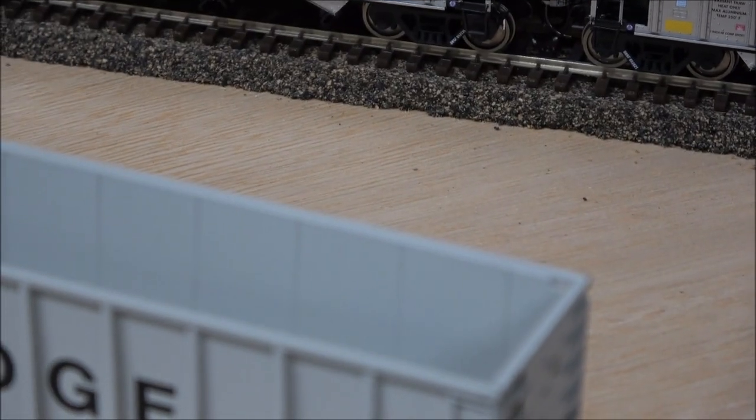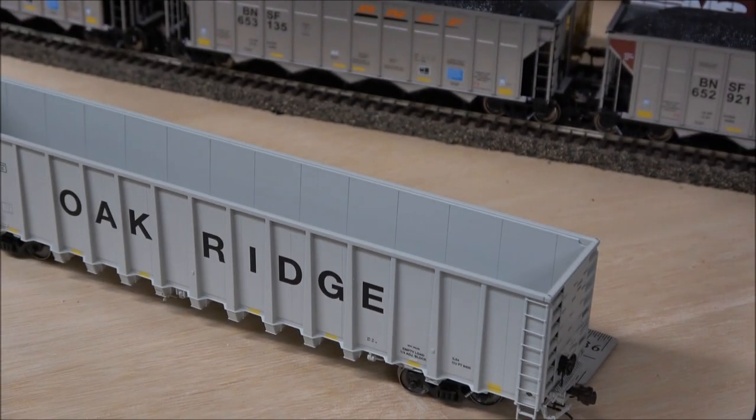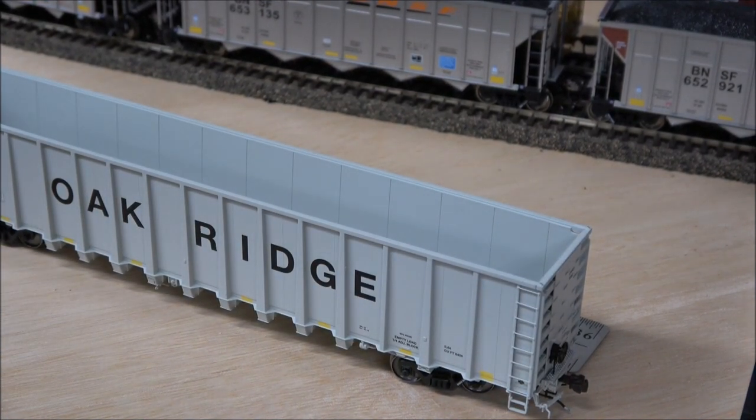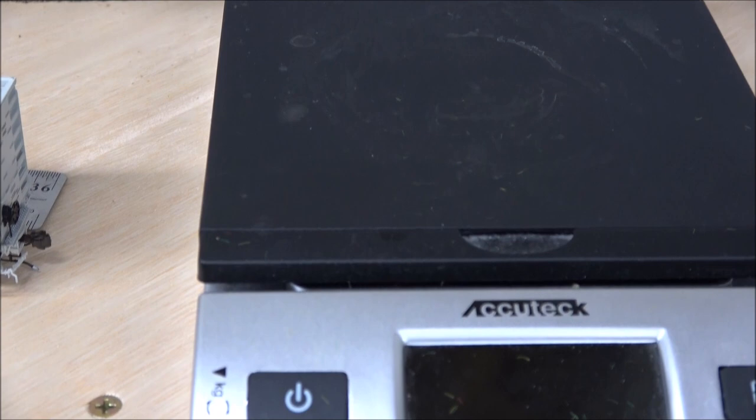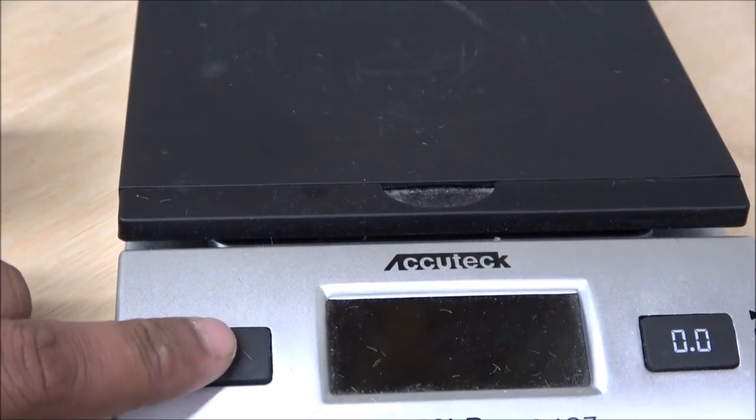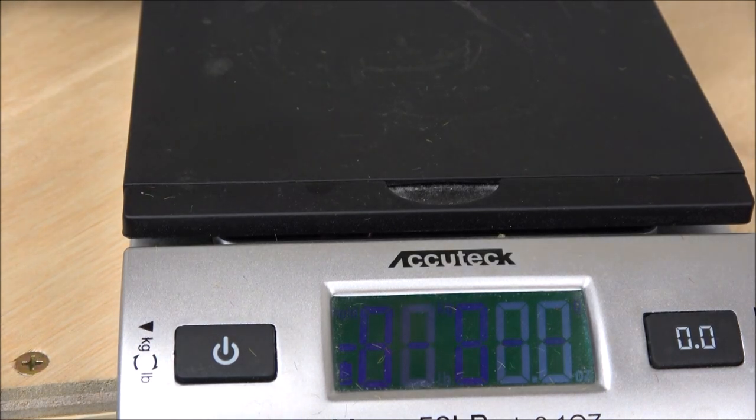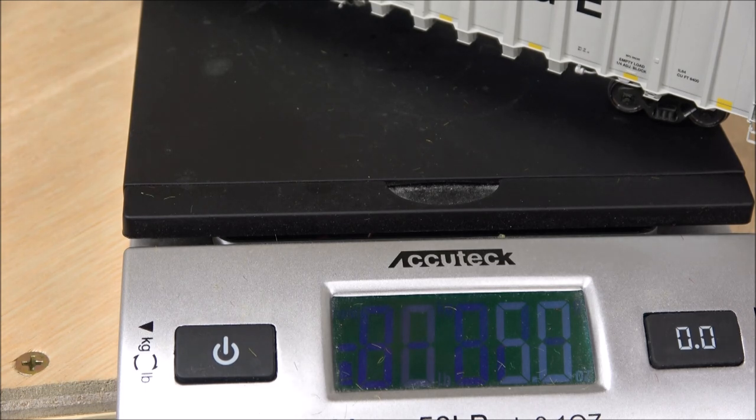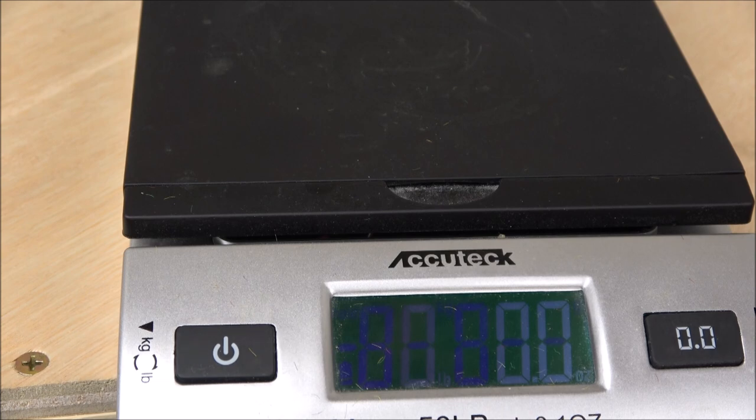For NMRA standards, off camera I did the couplers which weren't a problem, but on camera real quick I'll do - this should be nine inches and one initial ounce plus half ounce per inch, so four and a half. So these should weigh five and a half ounces. I don't know really the NMRA rules when you don't have any loads in it, but it's pretty close. It's five ounces, so not bad at all.